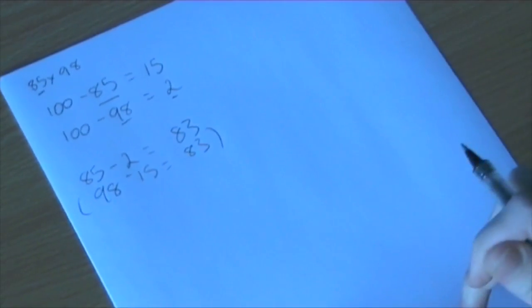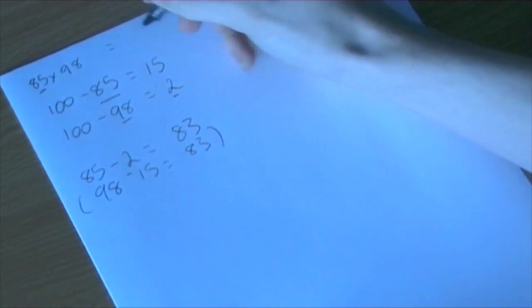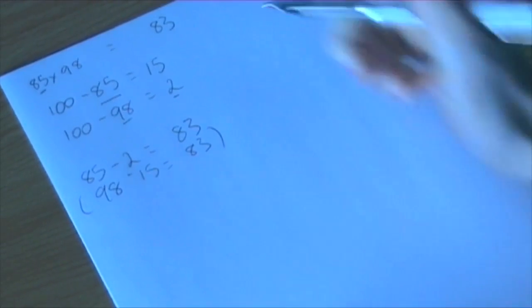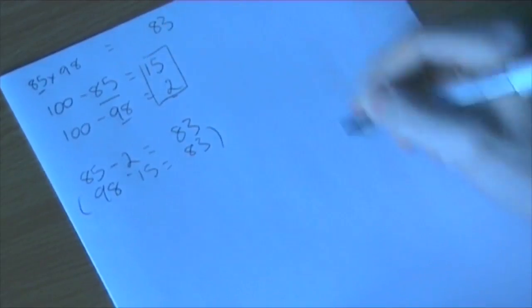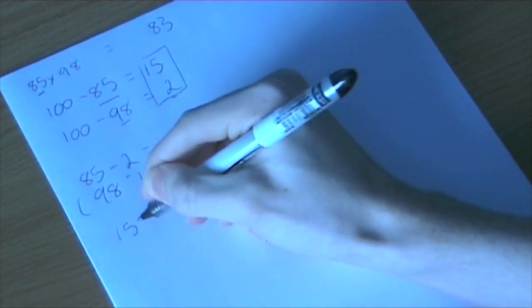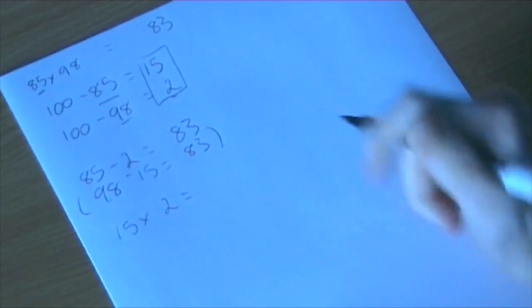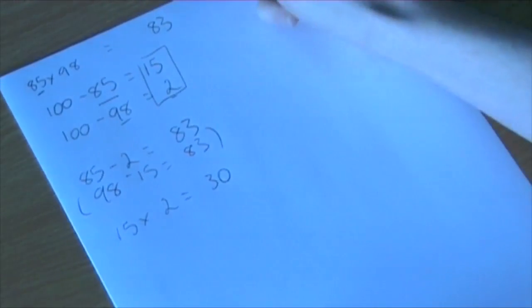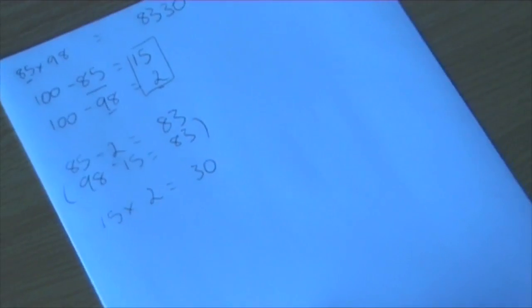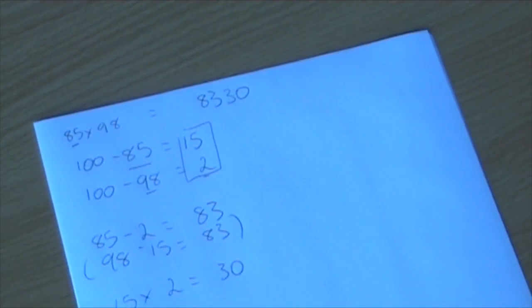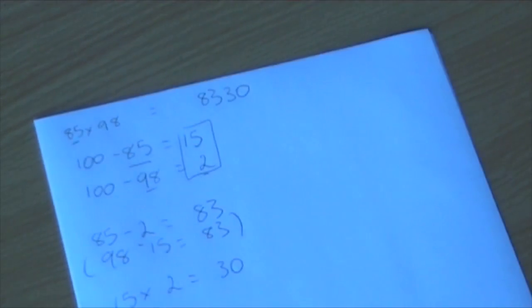So you only need to do one of those. So what I'm going to do is write equals and then 83. Now obviously 83 is not the answer. But if we take these two numbers here and multiply them together, nice simple multiplication, we get 30. And if I write that on the end of the 83, believe it or not, that is the answer to 85 times 98.